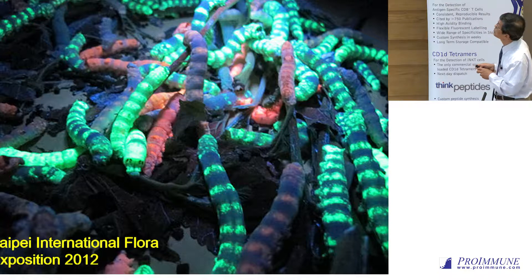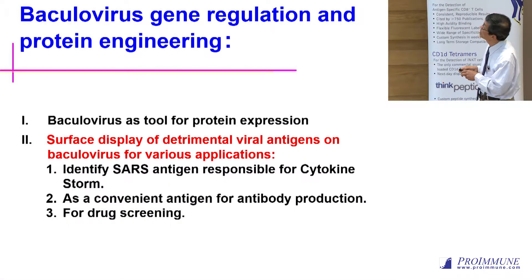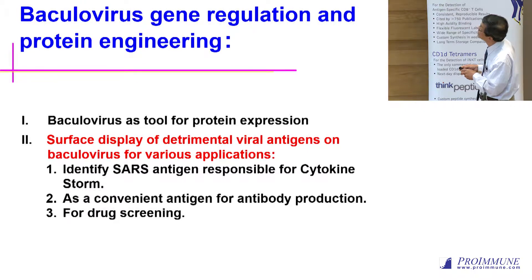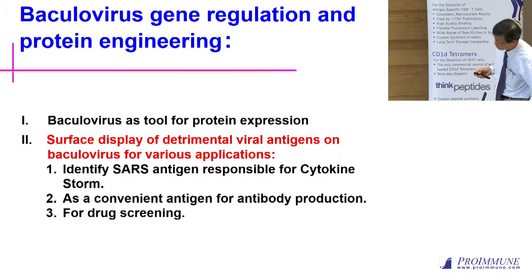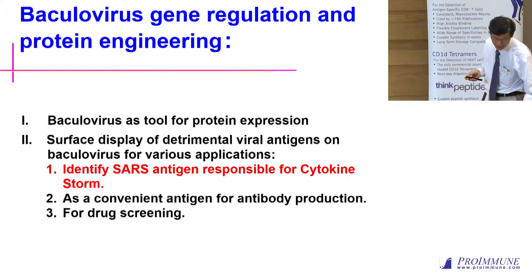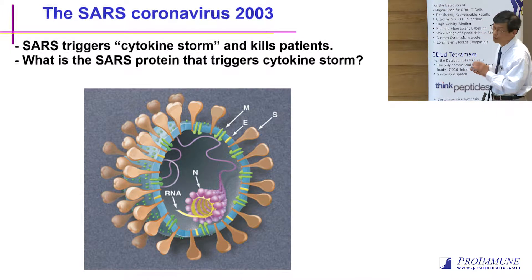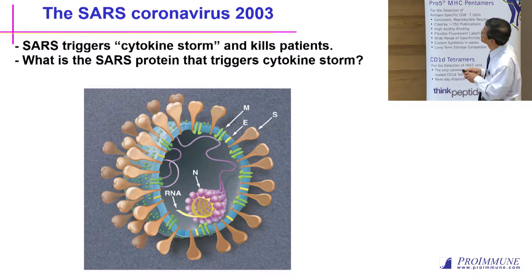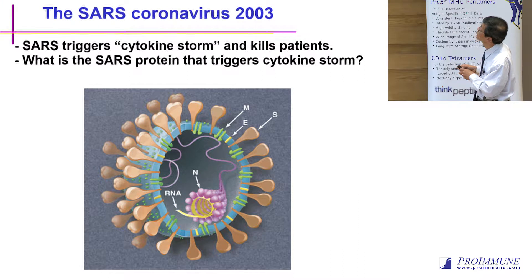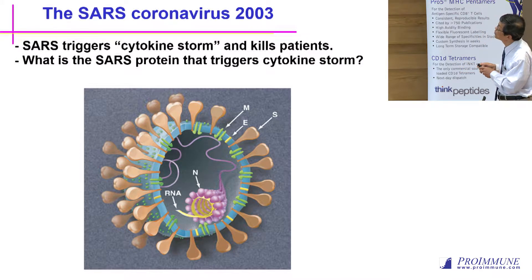Baculovirus can also display proteins on the surface envelope to represent detrimental virus antigens for various applications. The first application I'll show is identifying the SARS antigen responsible for cytokine storm. SARS virus is a very detrimental virus that occurred in 2002 to 2003. People believed the spike protein was the target — the causative gene which triggers cytokine storm. But the problem is that spike is a trimeric membrane protein; therefore, people who purified the protein through general engineering could not trigger cytokine storm.